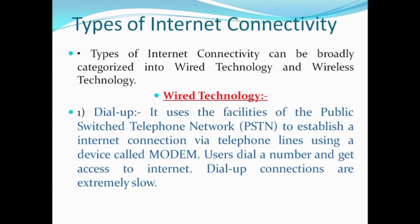The next topic is types of internet connectivity — how we can connect our devices to the internet. Types of internet connectivity can be broadly categorized into two categories: wired technology and wireless technology. In wired technology, the first is dial-up connection, which uses the public switched telephone network (PSTN) to establish an internet connection via telephone lines using a device called a modem. The full form of modem is modulator-demodulator. Dial-up connections are extremely slow.